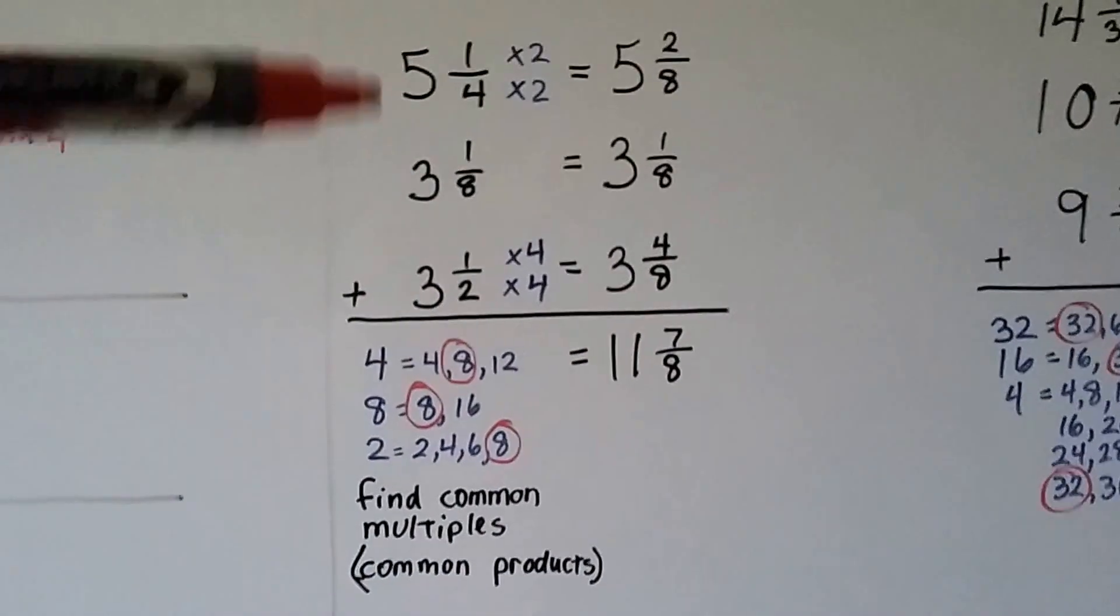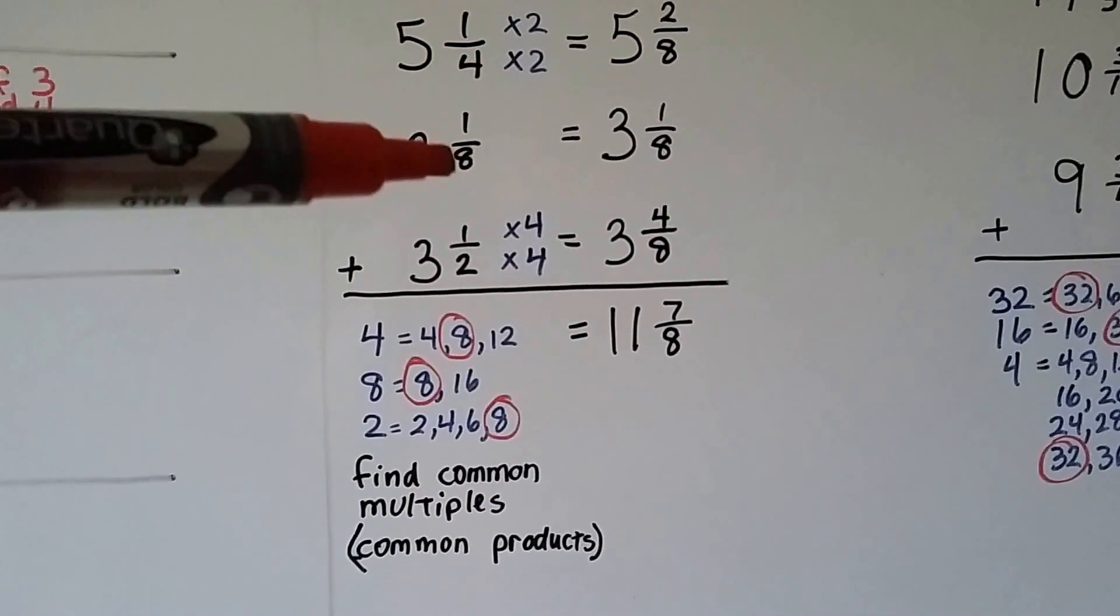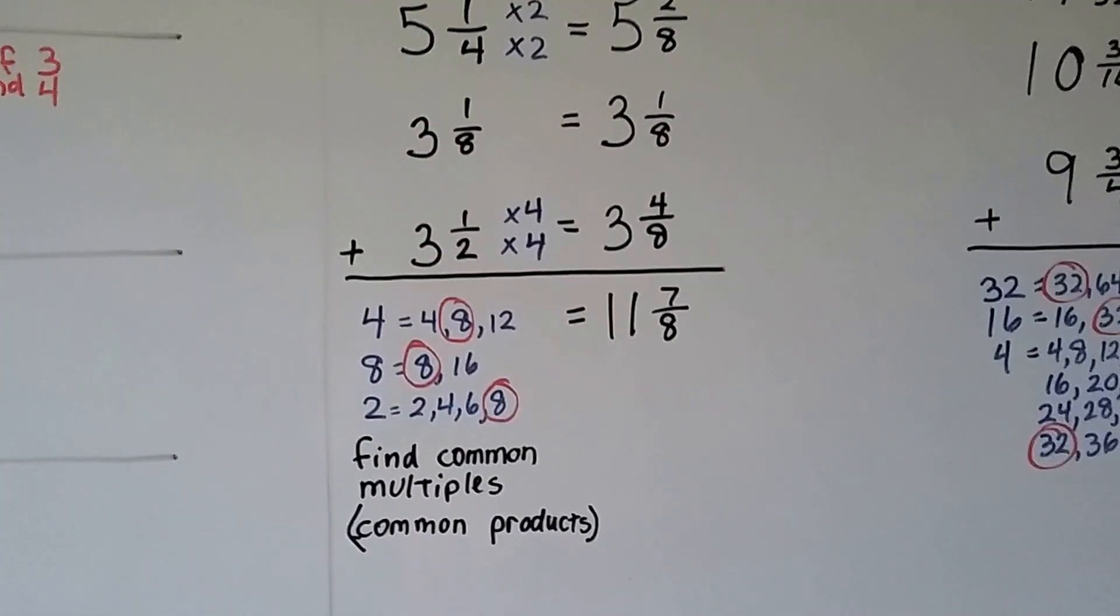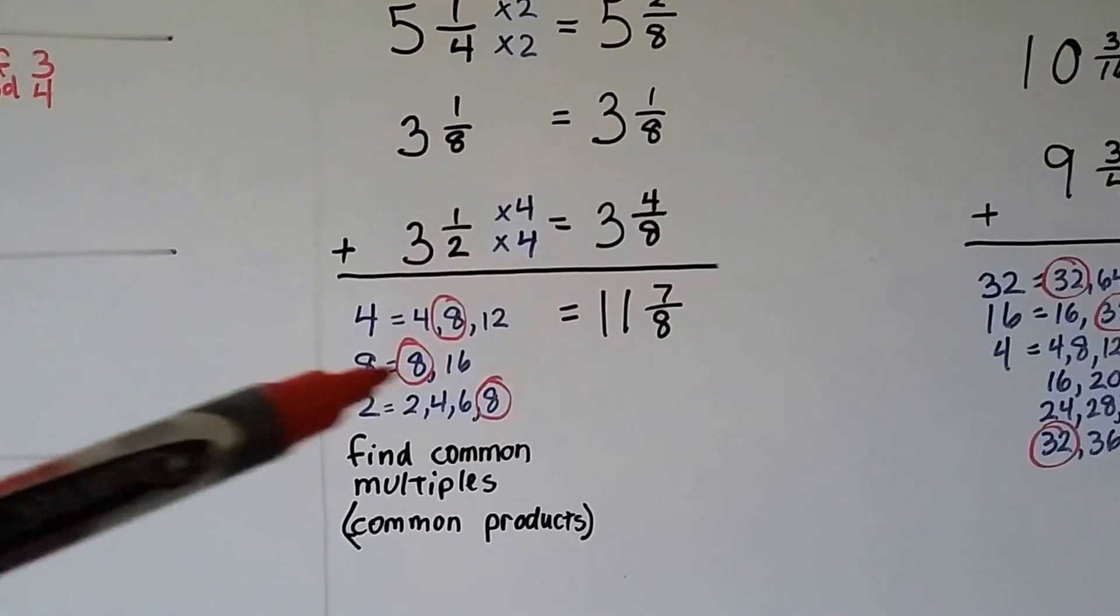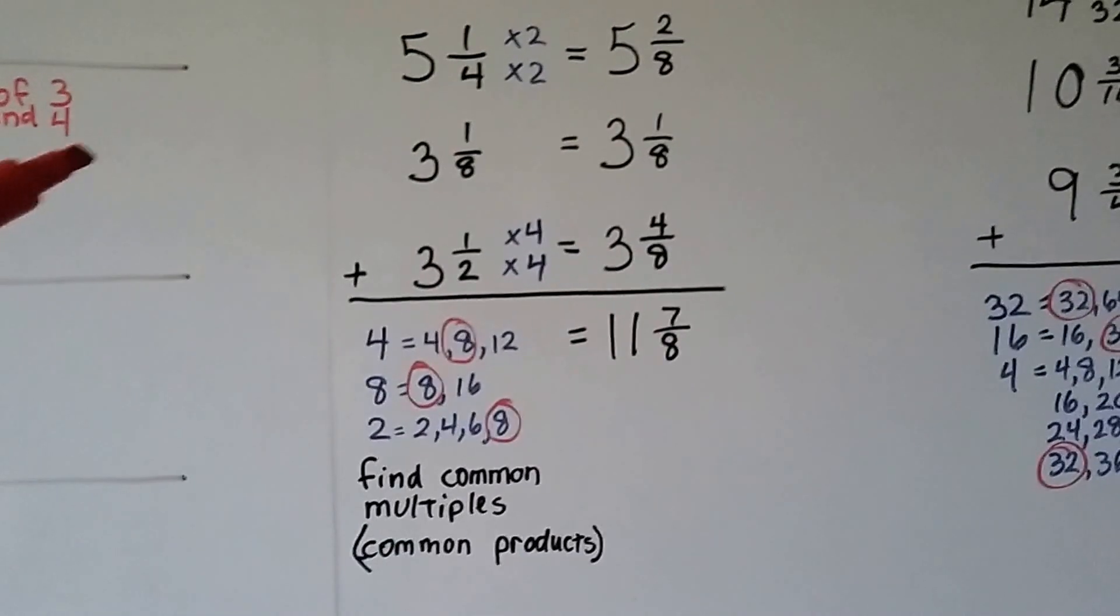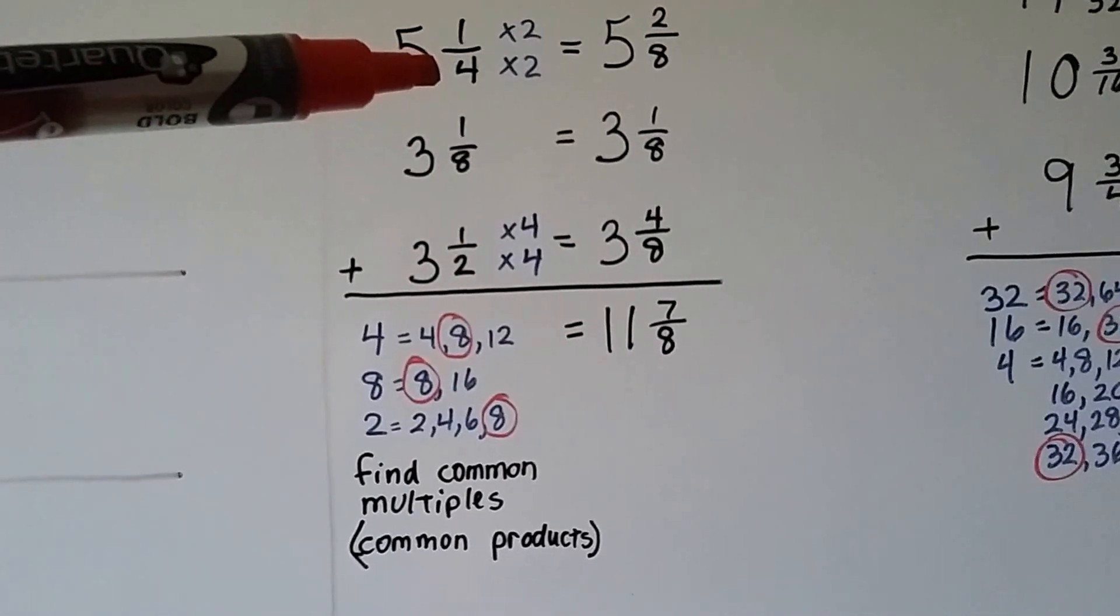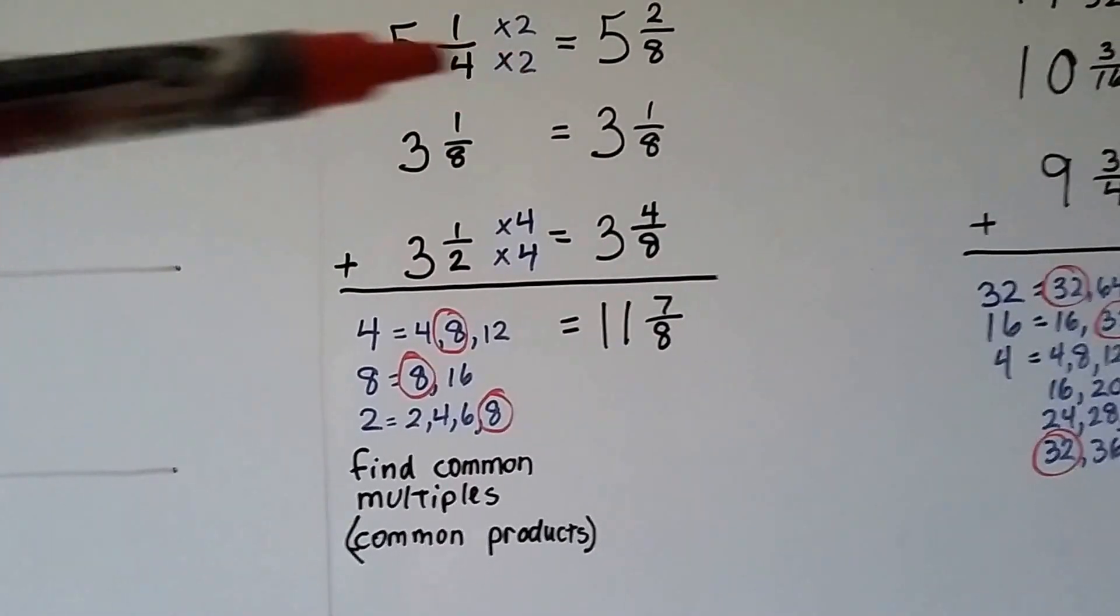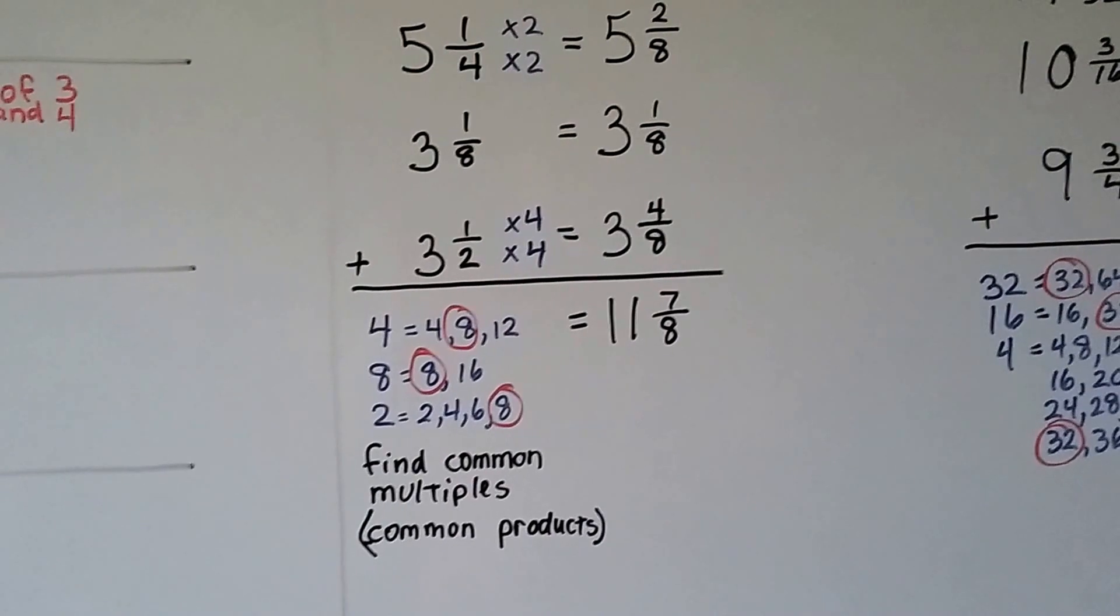We have three mixed numbers that we want to add. So what we're going to do is we're going to figure out the common multiples that 4, 8 and 2 can have. And we list all the common products that they could have. Looks like they can meet at 8. So they're going to meet at 8's house. We have to figure out what 4 needs to be an 8. It needs to be multiplied by 2. The numerator gets jealous. It wants to be multiplied by 2.